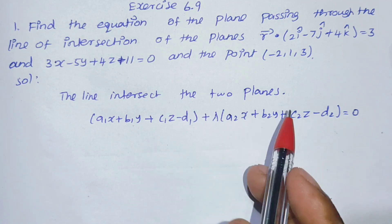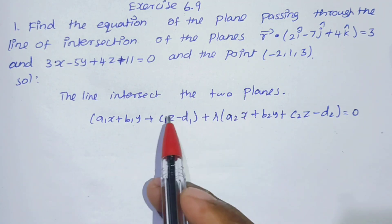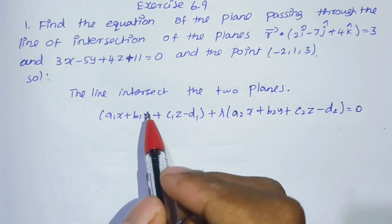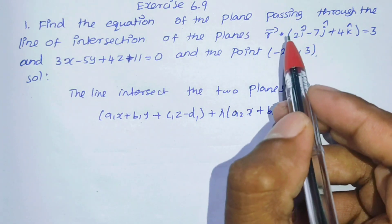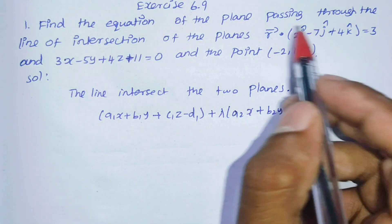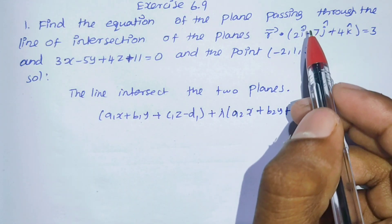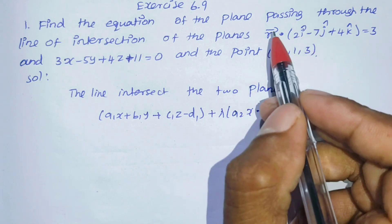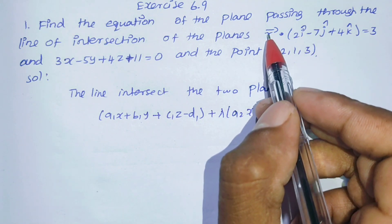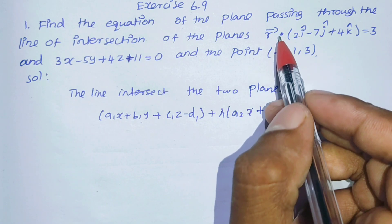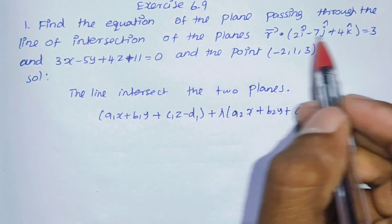Now, one of the plane equations is given in vector form, not Cartesian form. We convert it by substituting r vector as xi cap plus yj cap plus zk cap and multiplying out to get the Cartesian form.